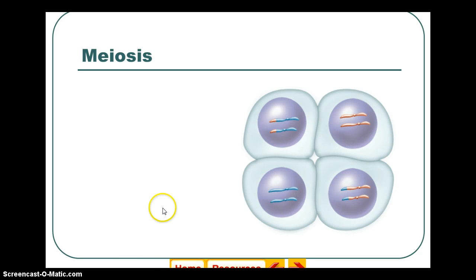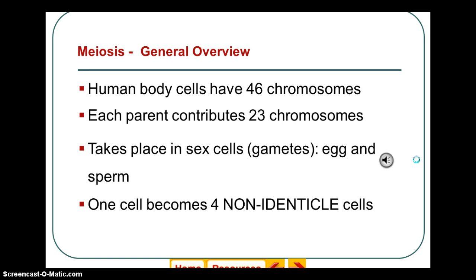Hello everyone, we're going to talk about meiosis. Meiosis is different than mitosis, mainly in that with meiosis you are producing four genetically different gametes. Gametes are sex cells — sperm or egg. Egg for female, sperm for male.